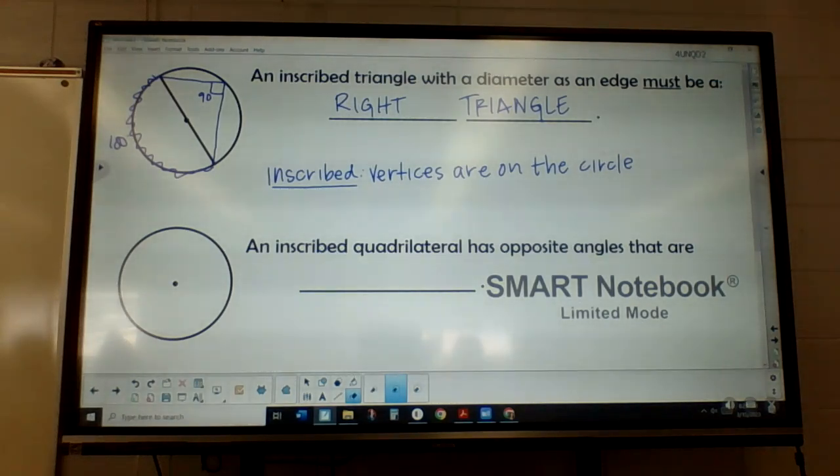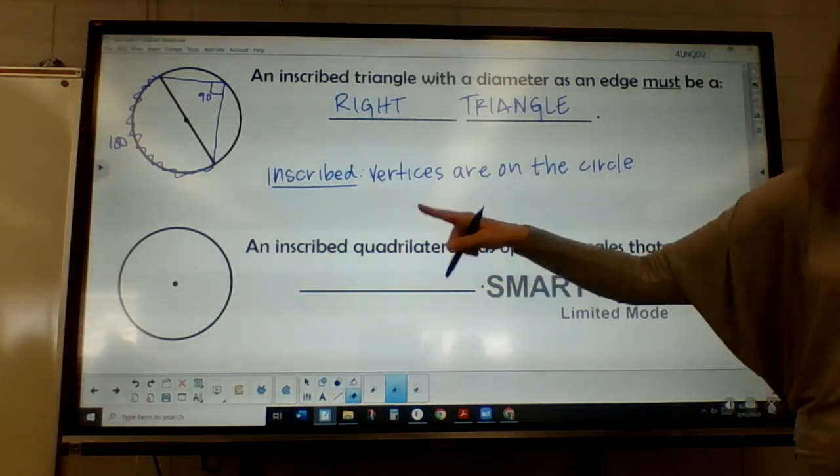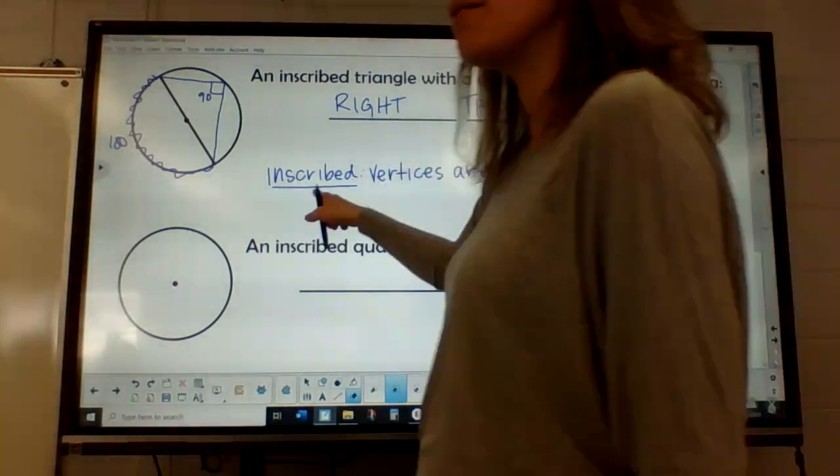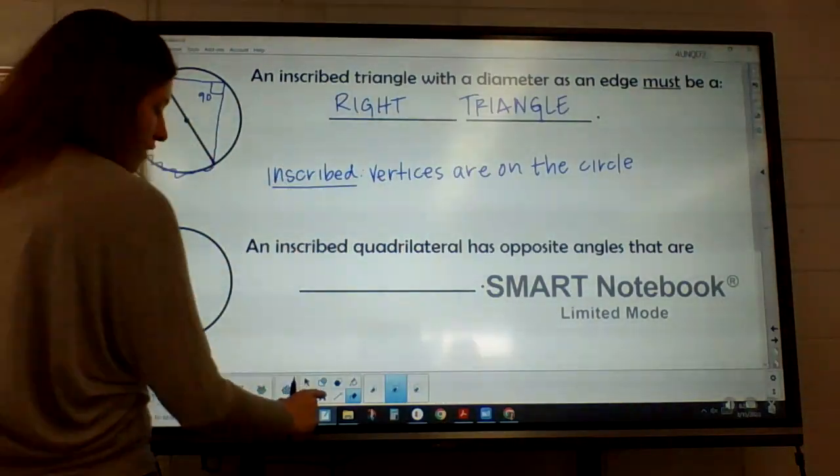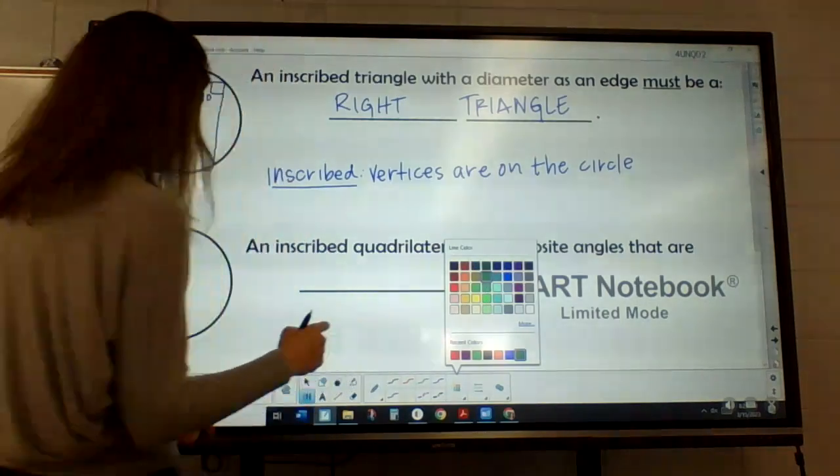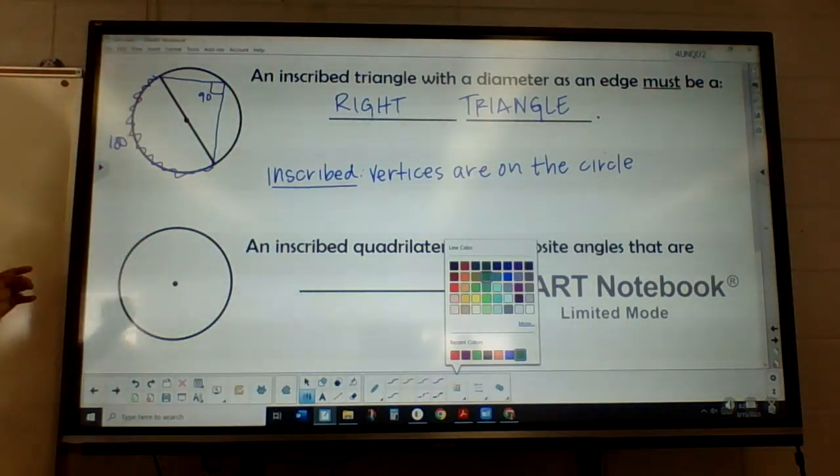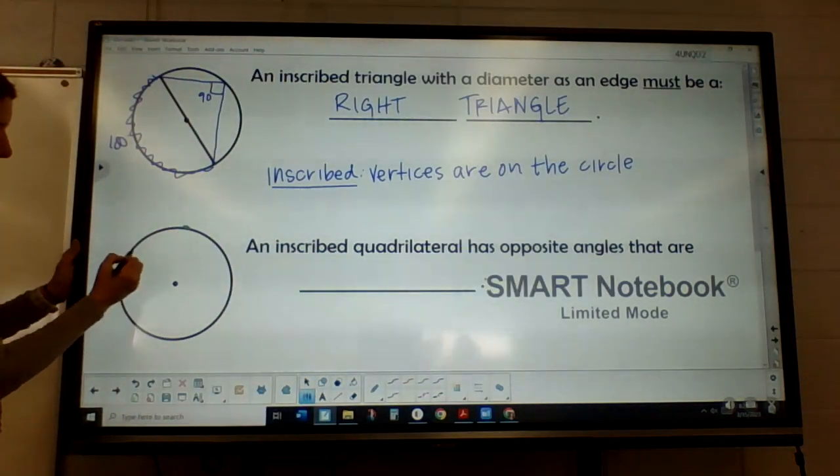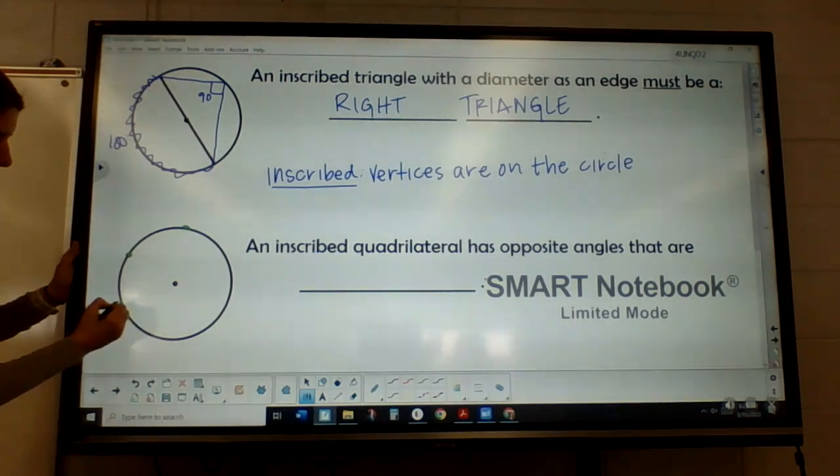The next one says an inscribed quadrilateral. So we're going to draw a four-sided shape that's inside of this. Again, inscribed means all the vertices are on the circle. So I'd like you guys to draw a four-sided shape where all the vertices are inside the circle. So you could put points wherever you guys would like them.